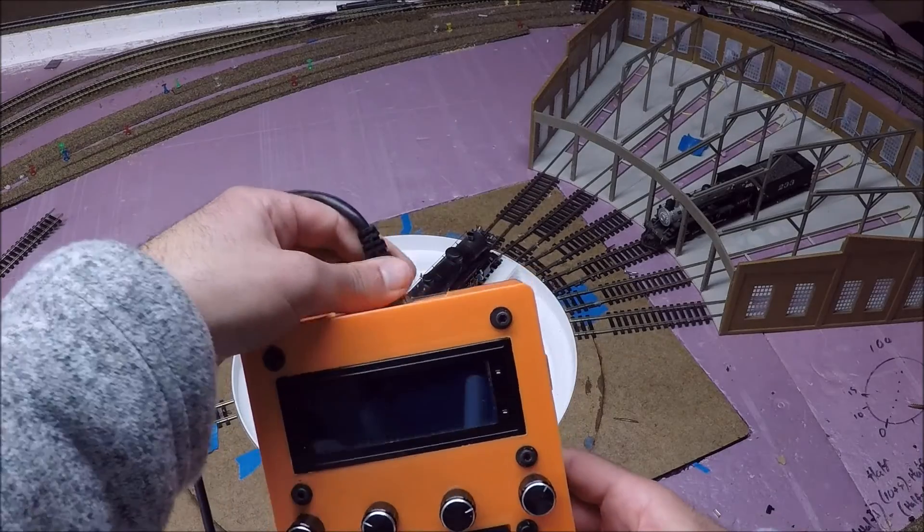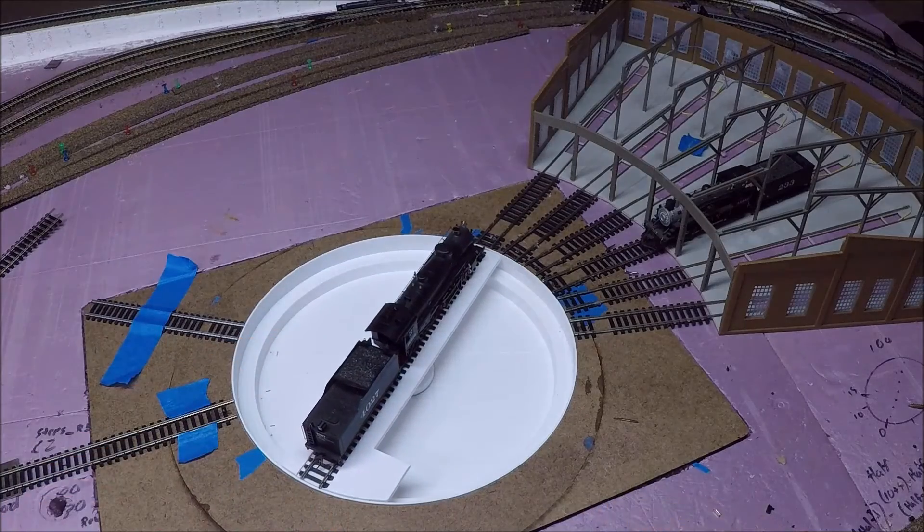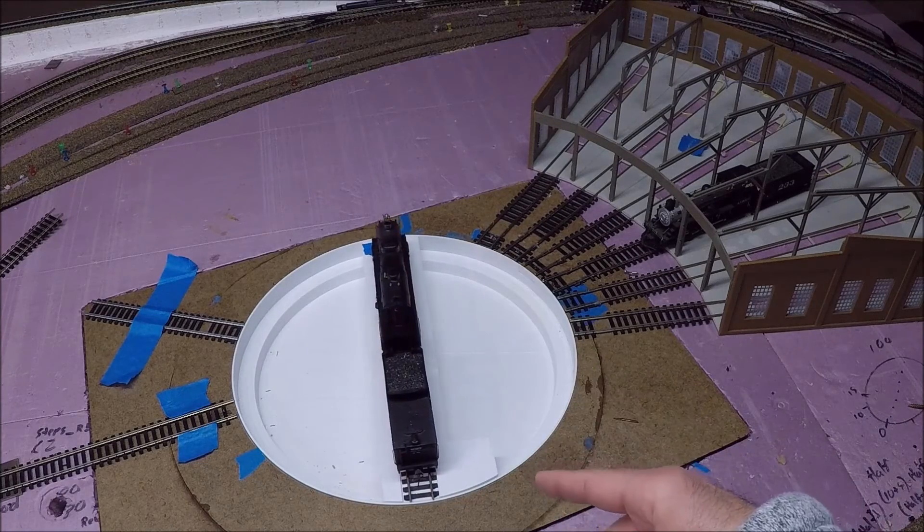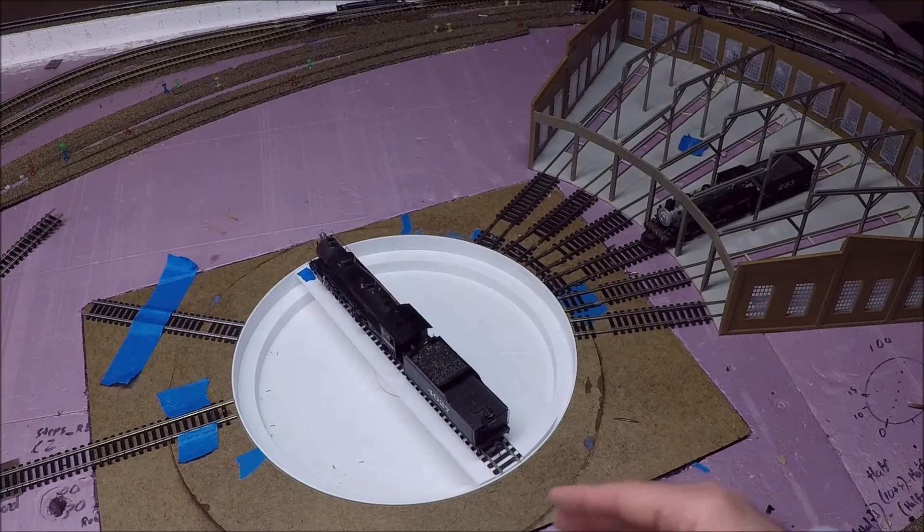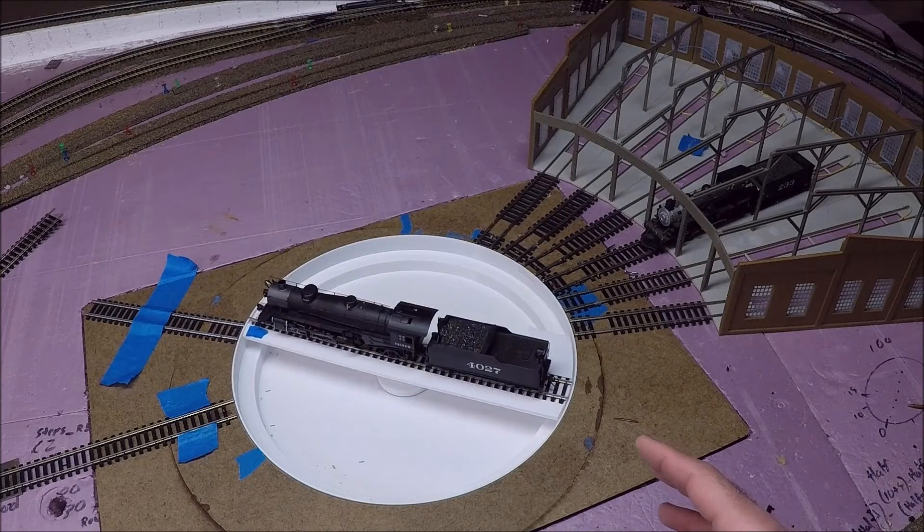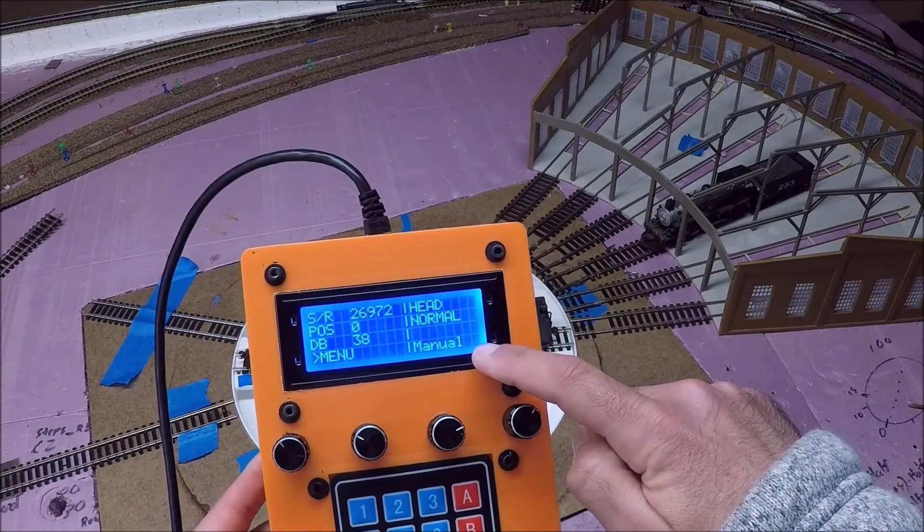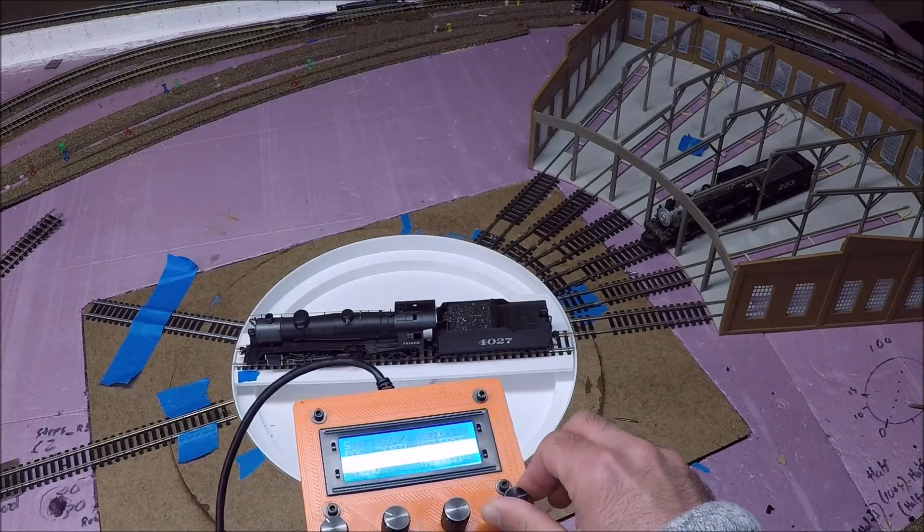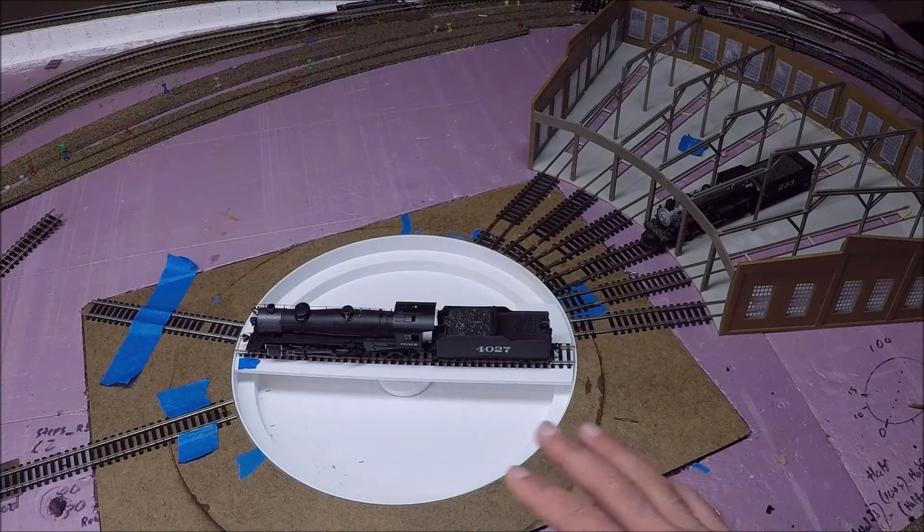And then the controller starts automatically homing the turntable. And what that does is it makes the magnet underneath the turntable line up with the hall effect sensor so that the turntable knows where it's at. Until that point, the turntable has no clue where it's at. Now, let's say you don't want to use the automatic functions of this turntable, and you don't want to install a hall effect sensor and a magnet. You can just press this button right here, and it changes it to manual mode. So you can just move the turntable however you want using the knobs on the controller, and you don't have to worry about installing the hall effect sensor or the magnet. All you need is the stepper motor, and it'll work fine.